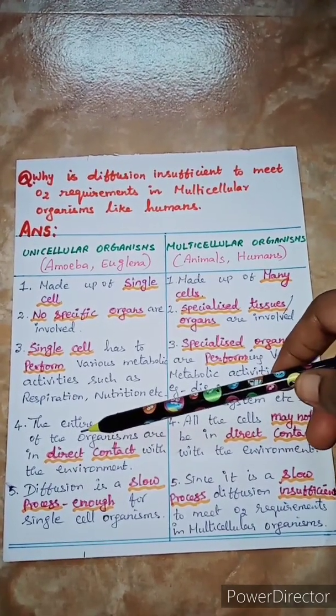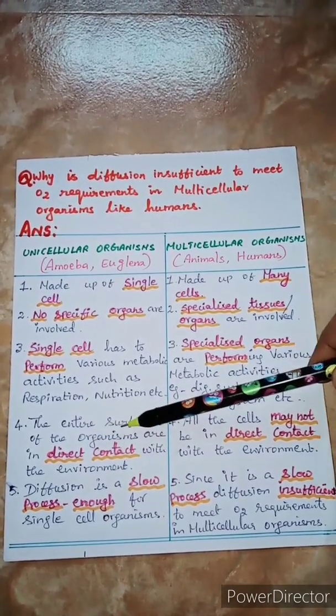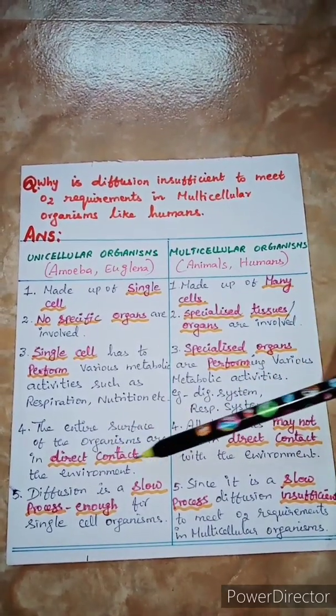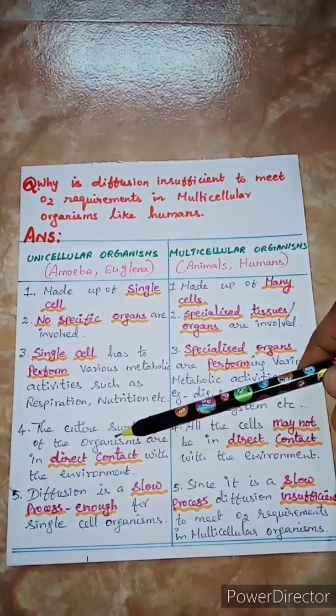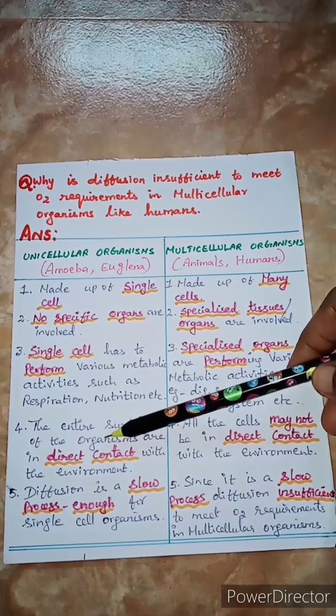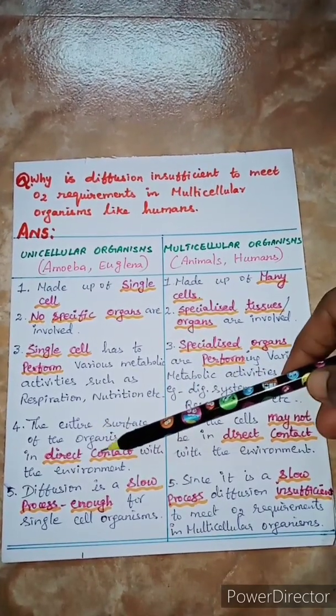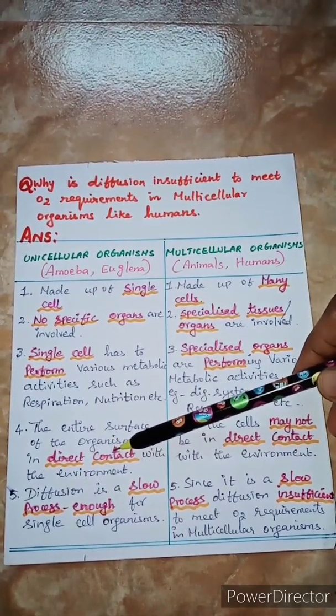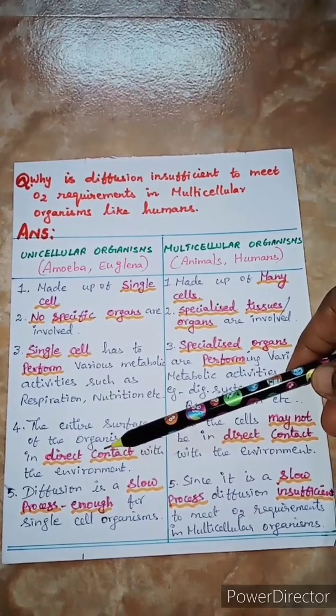And next important point, the entire surface of the organism is in direct contact with the environment because it is a single cell. So the single cell is contacting the environment directly. So simple diffusion is sufficient for the oxygen requirement.